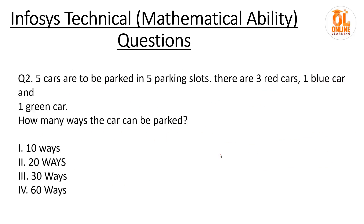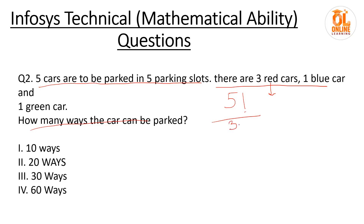Now let us move to the second question — permutation and combination. Five cars are to be parked in five parking slots: three red cars, one blue car, and one green car. How many ways can the cars be parked? Five cars can be arranged in 5! ways, but since there are three identical red cars, we divide by 3!.